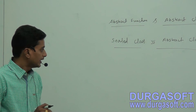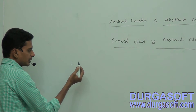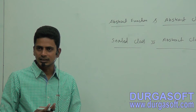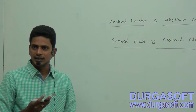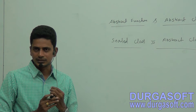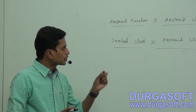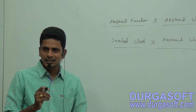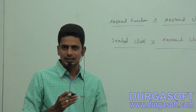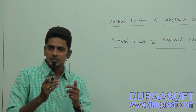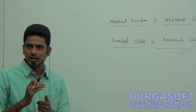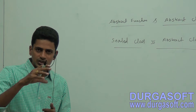Abstract class can contain all members of a class — data fields, constructors, destructors, events, indexes, and functions. Abstract class cannot be instantiated directly, meaning we cannot create an object for an abstract class. We need to create one more derived class from the abstract class to provide functionality to its abstract functions.